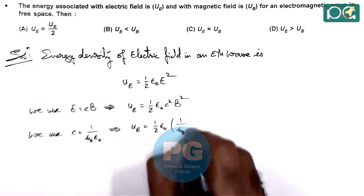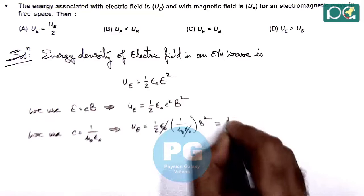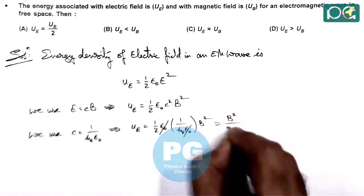Epsilon-not gets cancelled out and this gives B square by 2 mu-not, which is the energy density of magnetic field.